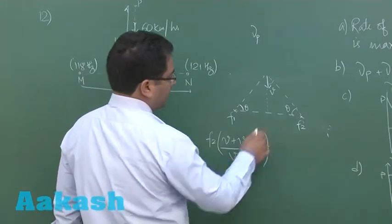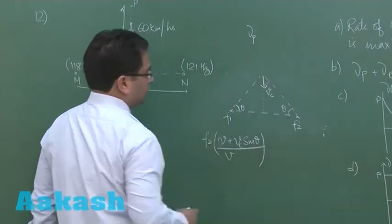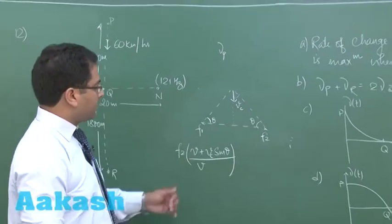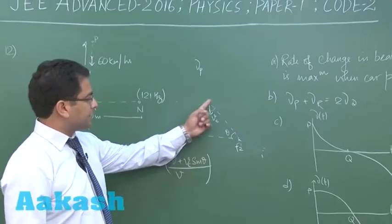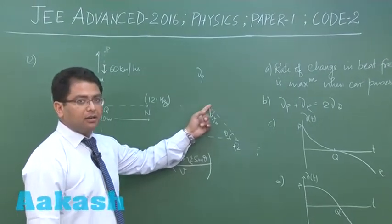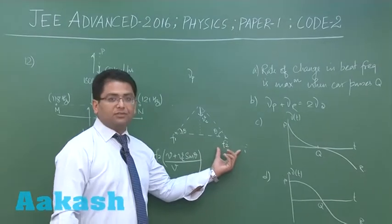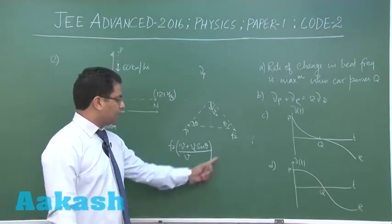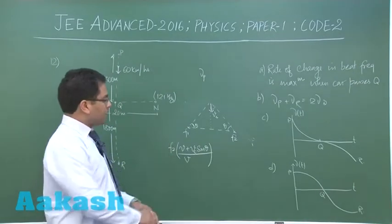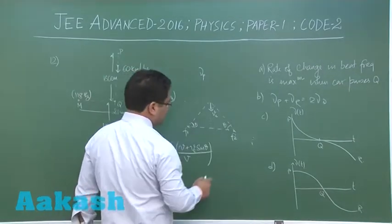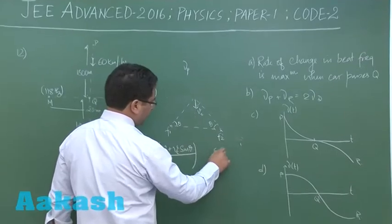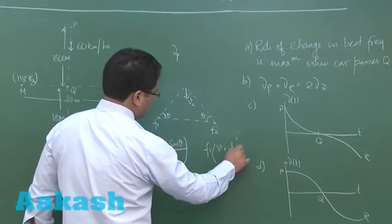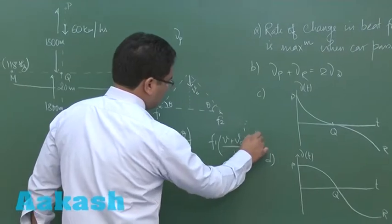V is the speed of sound. So Vc not to confuse. This is the frequency detected by the car. This is the frequency detected by the car, the original of which is F2. In other words the frequency F2 is perceived by the car in this magnitude. Likewise frequency F1 would be perceived by the car in magnitude F1 V plus Vc sin theta divided by V.